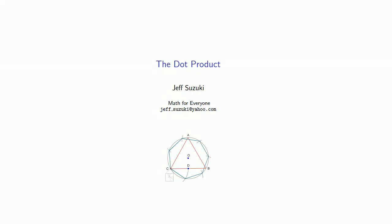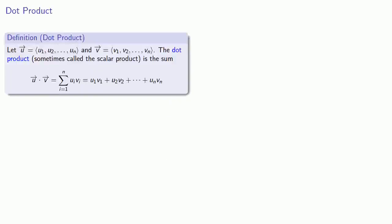So one of the most useful things we can compute given two vectors is known as the dot product. So suppose I have two vectors, u with components u1 through un, and v with components v1 through vn. The dot product, sometimes called the scalar product, is defined by the following sum,